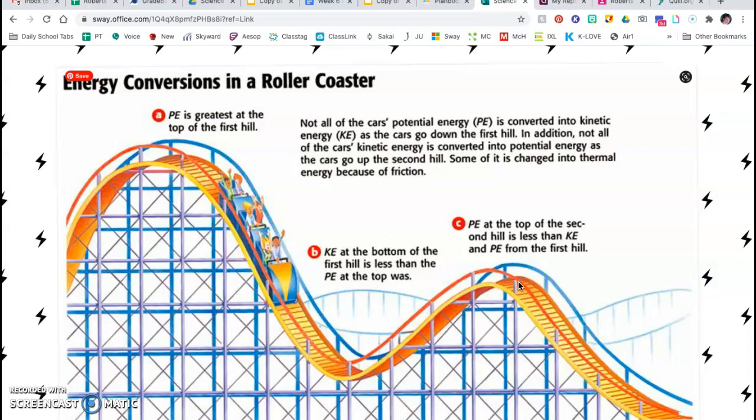Some of that energy is changed into thermal energy - heat. Because if you keep rubbing your hands together, it's going to get really hot. And that's the same thing that's going to happen with these roller coaster wheels.